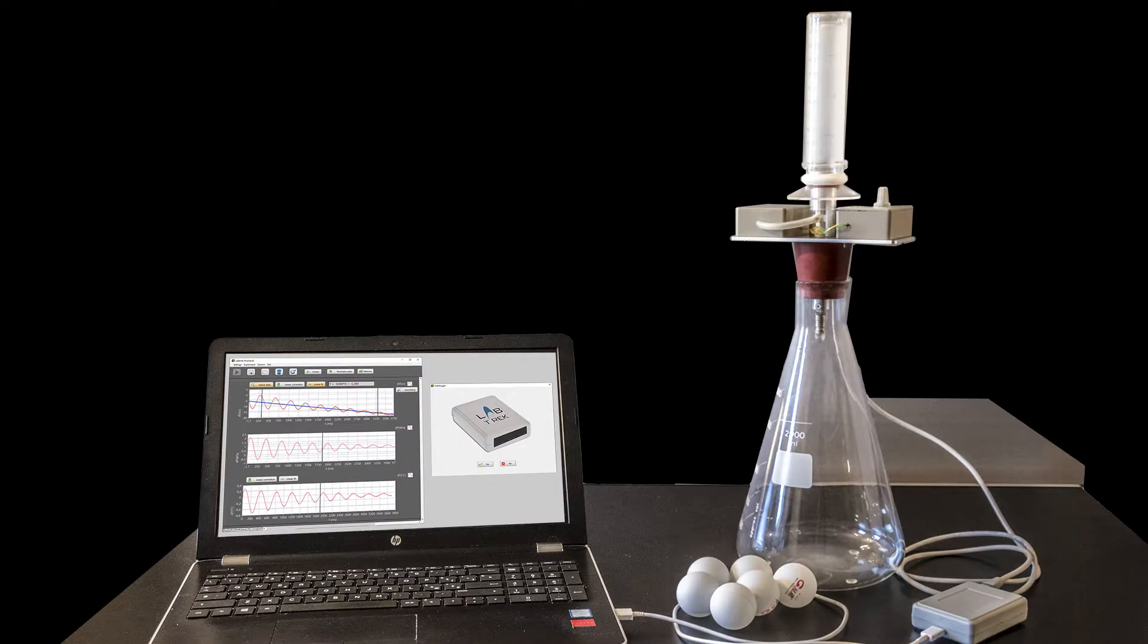Let's now look at the experimental setup in detail. The Labtrek system consists of a flask of known volume, a series of balls to vary the volume, a piston, a series of pre-installed sensors, a data logger, and the acquisition software.